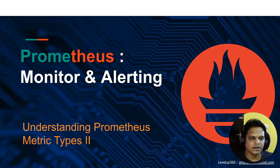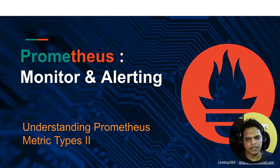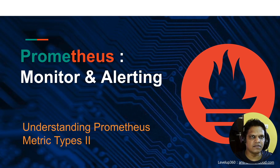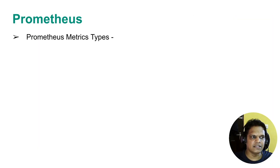Hello team, welcome back. We were discussing the metric types in Prometheus. In the previous lecture, we discussed the counter metric and the gauge metric, but we have two more metrics available in Prometheus: the histogram metric and the summary metric.